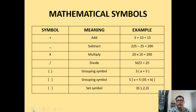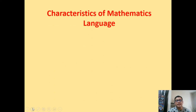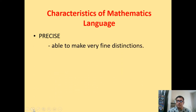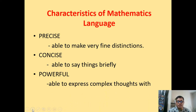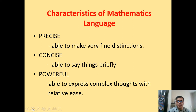So, mathematical symbols — there are several symbols; these are just a few of the commonly used ones, and you can explore more on different mathematical symbols. I also discussed the characteristics of mathematics language: number one, precise — able to make very fine distinctions. The language of math is precise and concise, able to say things briefly because of the symbols. And of course, powerful — mathematics language is able to express complex thoughts, as seen in the creation of formulas and others.